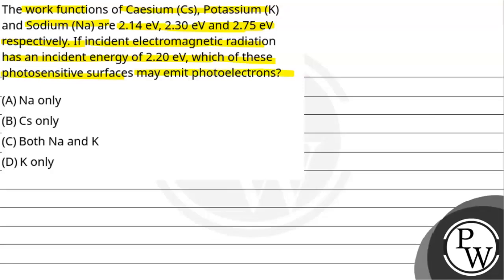So we have three surfaces given: cesium, potassium, and sodium. Their respective work functions are given. Now, if the incident frequency is 2.20 electron volt, we need to determine which surface will emit photoelectrons.